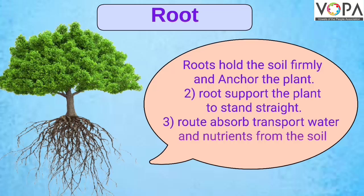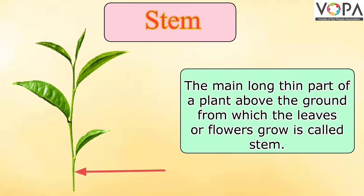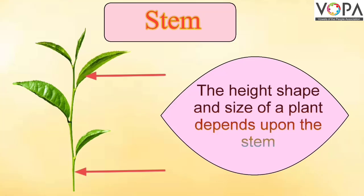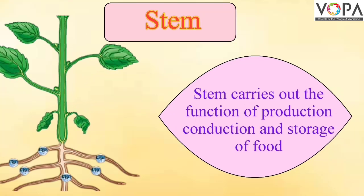The next part of the plant is stem. The main, long, thin part of a plant above the ground from which the leaves and the flowers grow is called stem. The height, shape, and size of a plant depends upon the stem. The stem carries out the function of production, conduction, and storage of food.